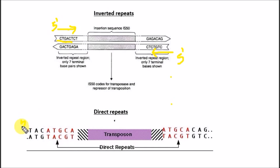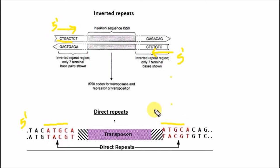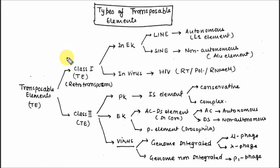In direct repeats, the same sequence is present in the same strand — not in the complementary strand. For example, the sequence ATGC appears in the 5' to 3' direction at two positions within the same strand, making them direct repeats.